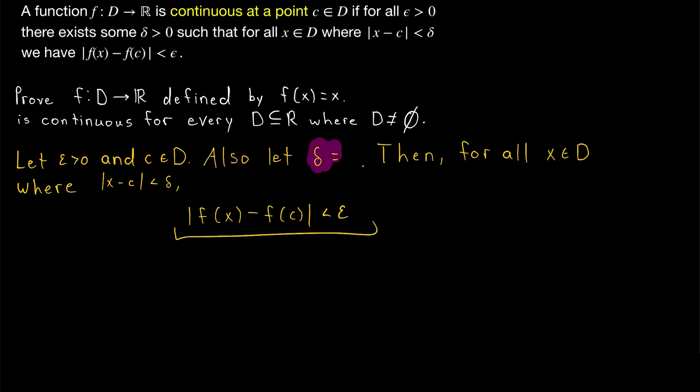In order to figure out what delta value is going to work for our proof, let's work with this expression a little bit: the absolute value of f of x minus f of c, and see how we can control it with delta. This is just like with a lot of our convergent sequence proofs where we do scratch work by working with the absolute value of a_n minus the limit a. In this case, things are going to work out very nicely.